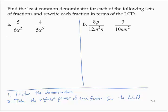Find the least common denominator for each of the following sets of fractions and rewrite each fraction in terms of the LCD. We have 5 over 6x squared and 4 over 5x to the fifth. To find the LCD, the first thing we do is factor the denominators, if possible.